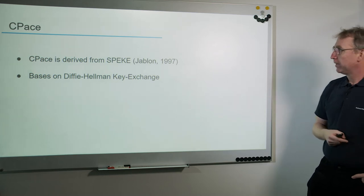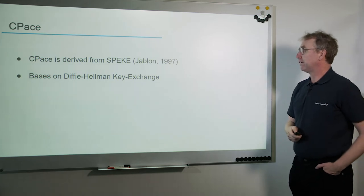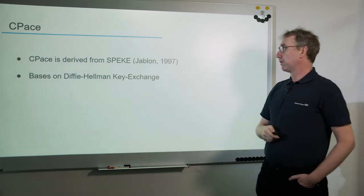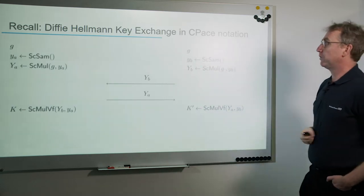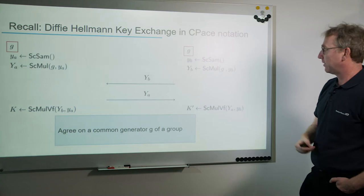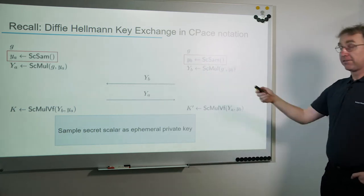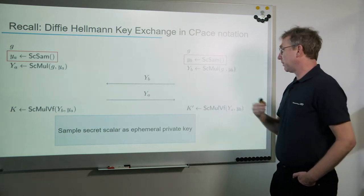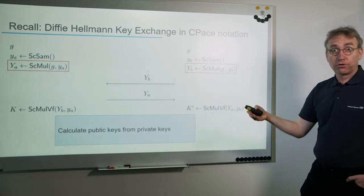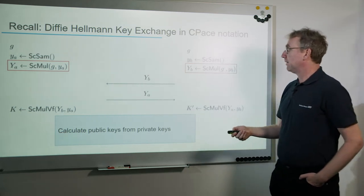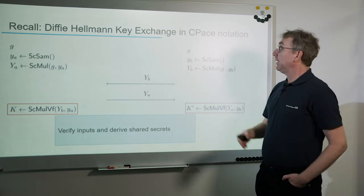How does CPACE work? CPACE is derived from an older protocol, SPEAK, designed by Yablon in 1997. SPEAK itself is based on Diffie-Hellman key exchange. In Diffie-Hellman, both sides agree on a common generator of a group, sample secret scalars as private ephemeral keys, calculate public keys from the private keys, exchange the public keys, verify the inputs, and derive the shared secrets.